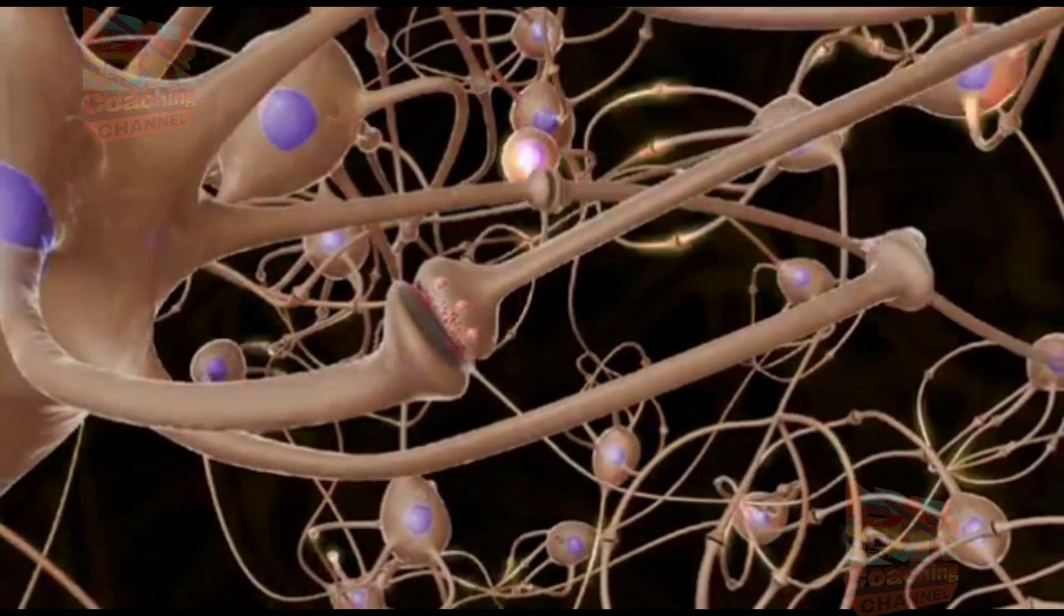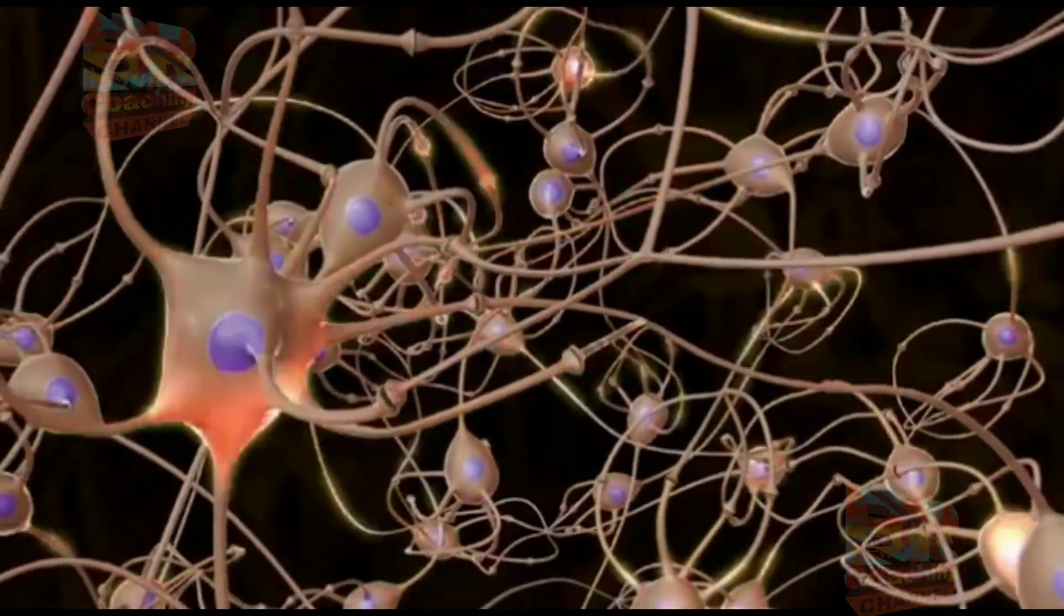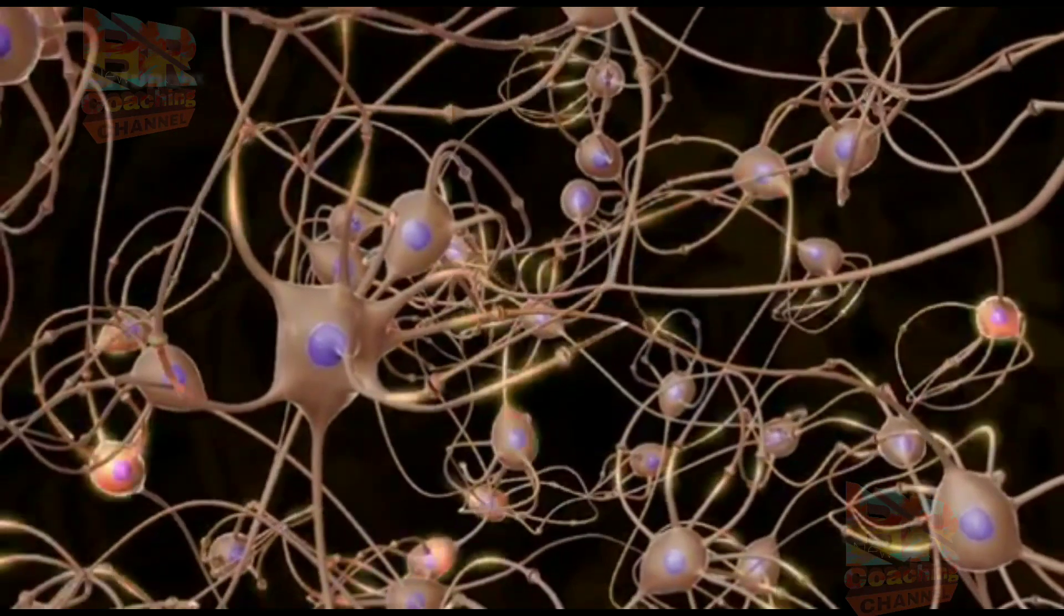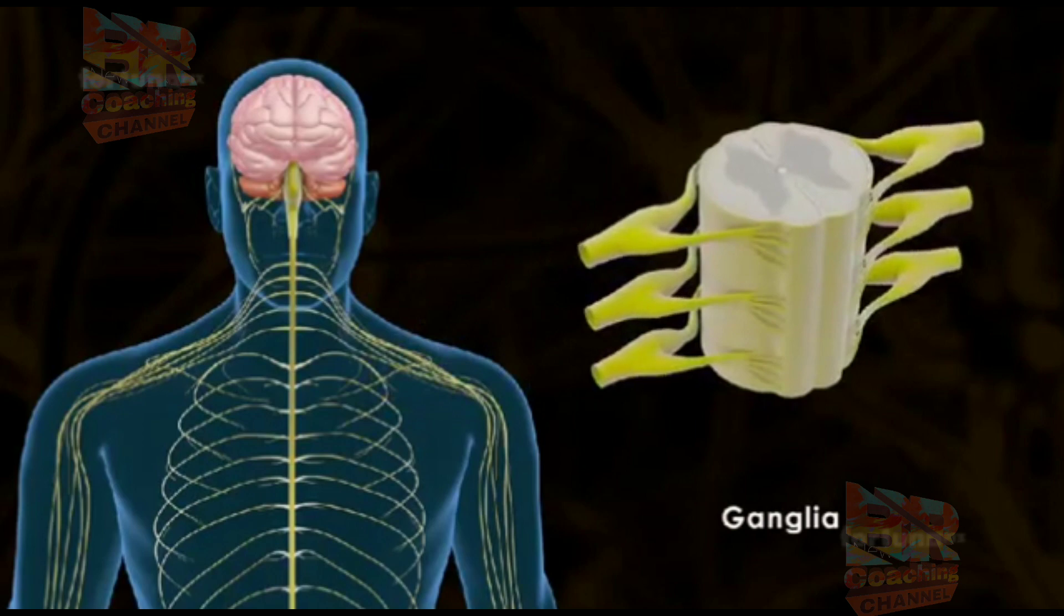Together, axons and dendrites form bundles of nerve fibers commonly referred to as nerves. Clusters of nerves are known as ganglia.